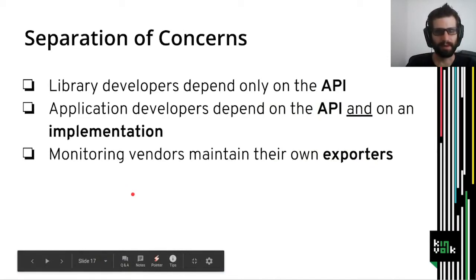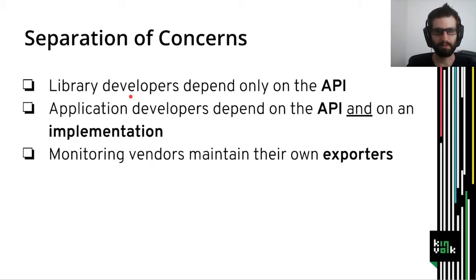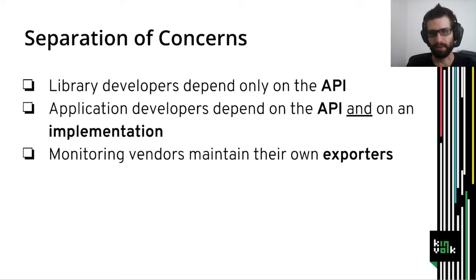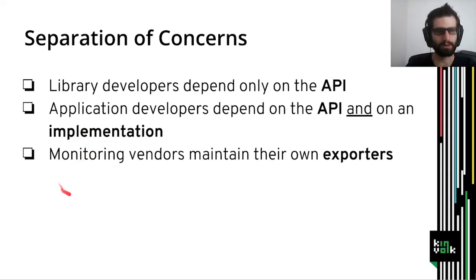The architecture of OpenTelemetry is designed with a separation of concerns. Library developers only have to depend on the API — they only worry about importing and using it without knowing anything about the real implementation. Application developers have to worry about both the API and the implementation. Monitoring vendors should maintain their own exporters — there is a clearly defined interface between the exporters, so they only need to worry about implementing those.